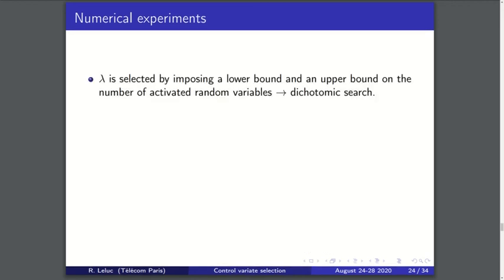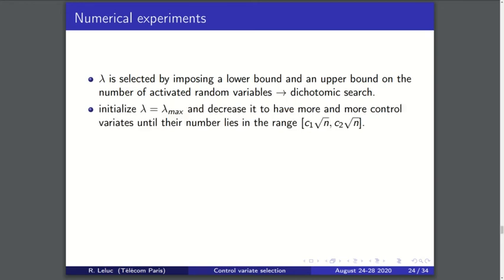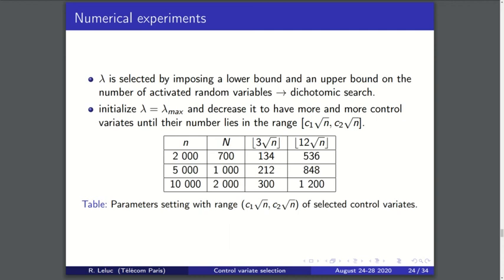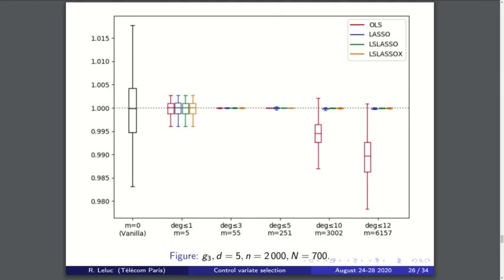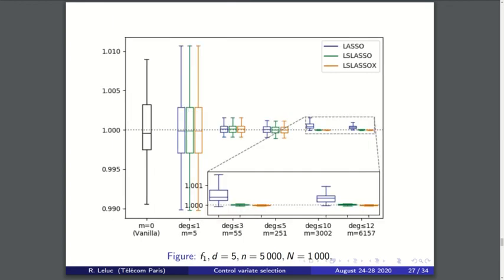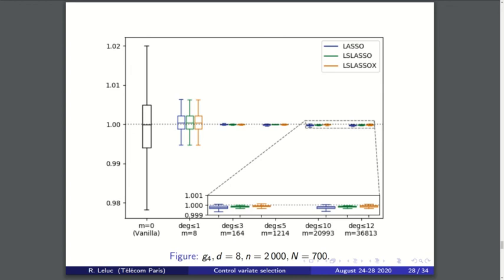Lambda here has been selected by a dichotomy search to select a number of control functions of order square root of n. Here are the results: you can see that all the methods perform well, but when the number m of control functions is higher than the number n of samples, the OLS becomes unstable and we need to focus on the lasso-based method. Even in high dimension, here d equals 5 or d equals 8, the lasso-based method performs very well.